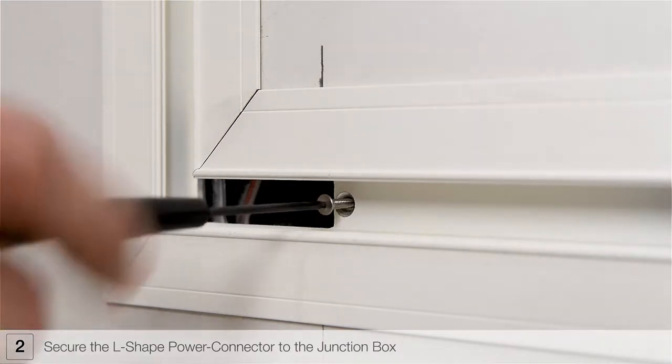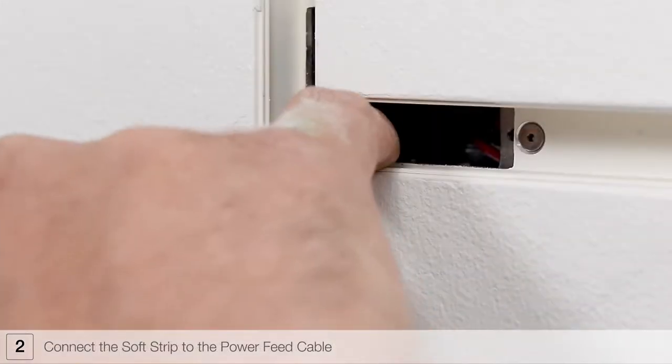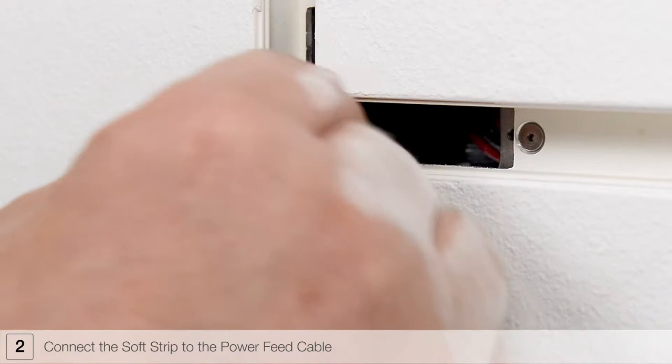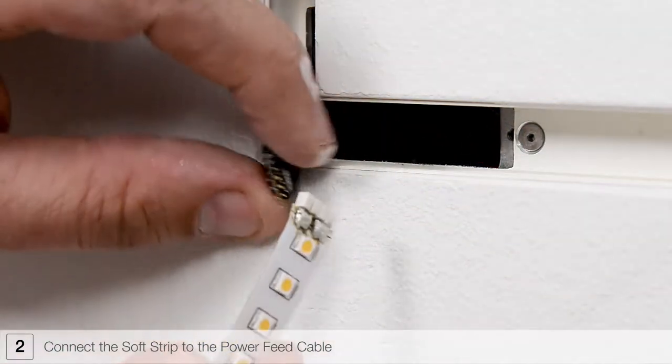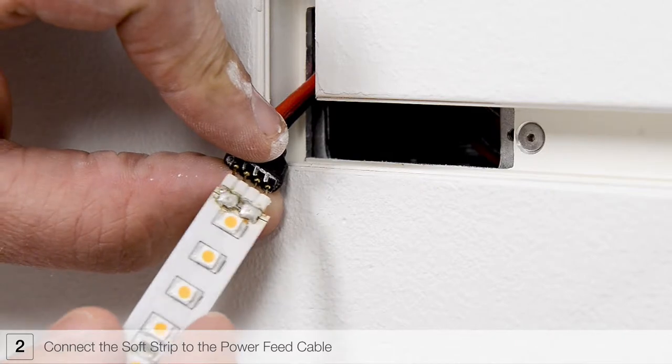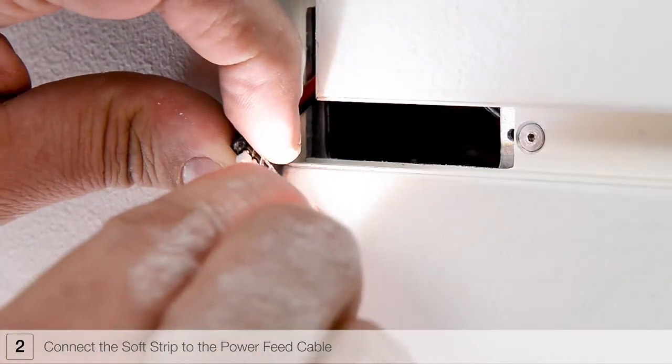Secure the L-shaped power connector to the junction box. When connecting strip to the power feed cable, it is important to align the plus 24 VDC marking on the soft strip with the red wires of the power feed cable.